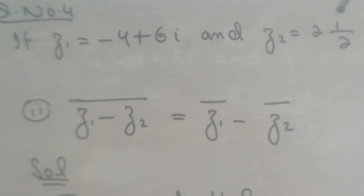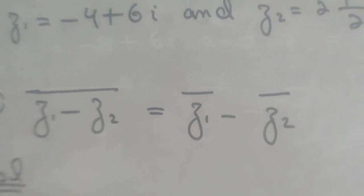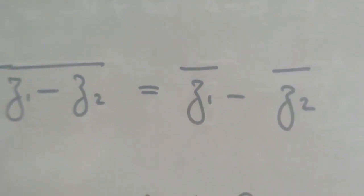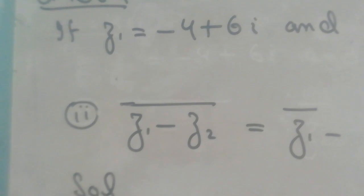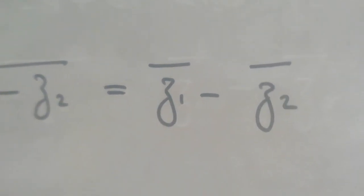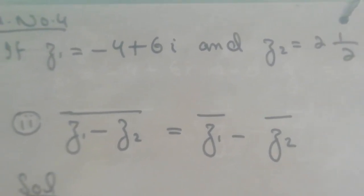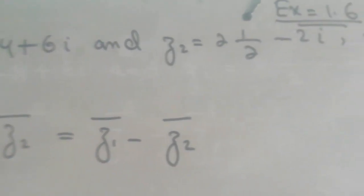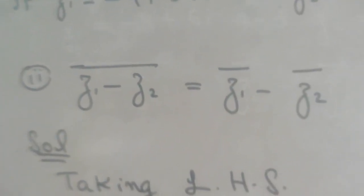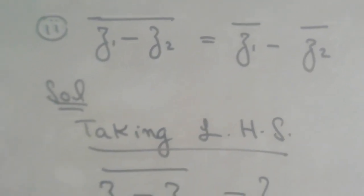In the previous question we verified that the whole conjugate of z1 plus z2 should be equal to conjugate of z1 plus conjugate of z2. Now in this question we have to verify that the whole conjugate of z1 minus z2 should be equal to conjugate of z1 minus conjugate of z2.